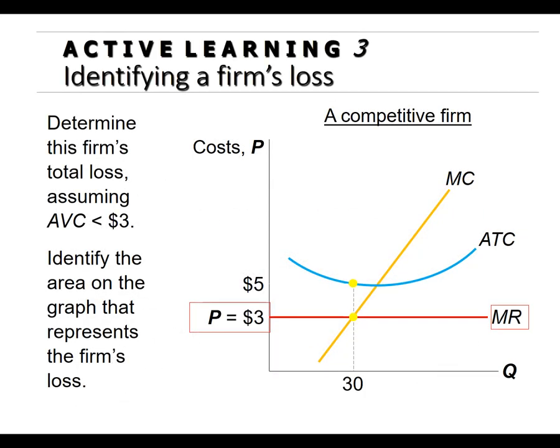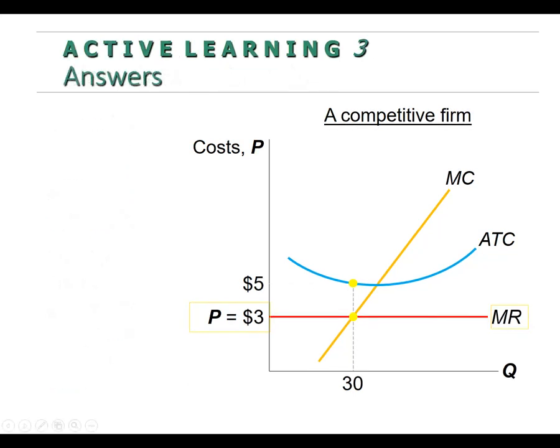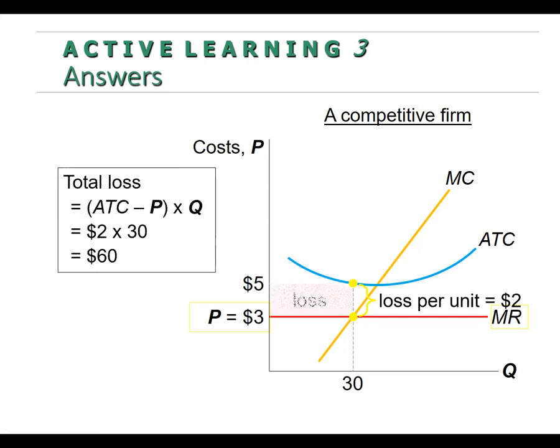Now in this case, marginal revenue is below average total cost, so we know we're going to lose money. How much are we going to lose? We're going to lose $2 per unit, so it's $2 times 30 — we're going to lose $60. There's a $60 loss.